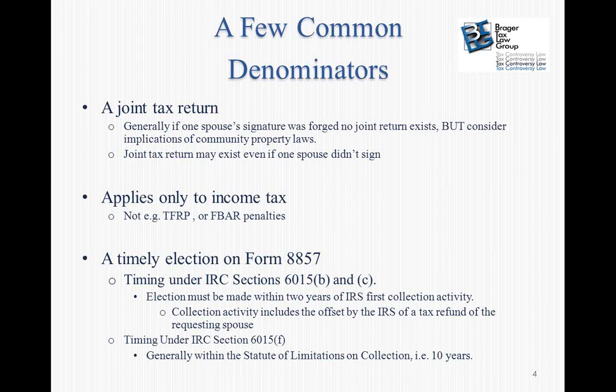The next item needed for innocent spouse relief of any kind is a timely election, made by filing IRS Form 8857. That form explains why your client is entitled to innocent spouse relief. The election needs to be timely — under Sections 6015(b) or (c), it must be made within two years of the IRS's first collection activity.